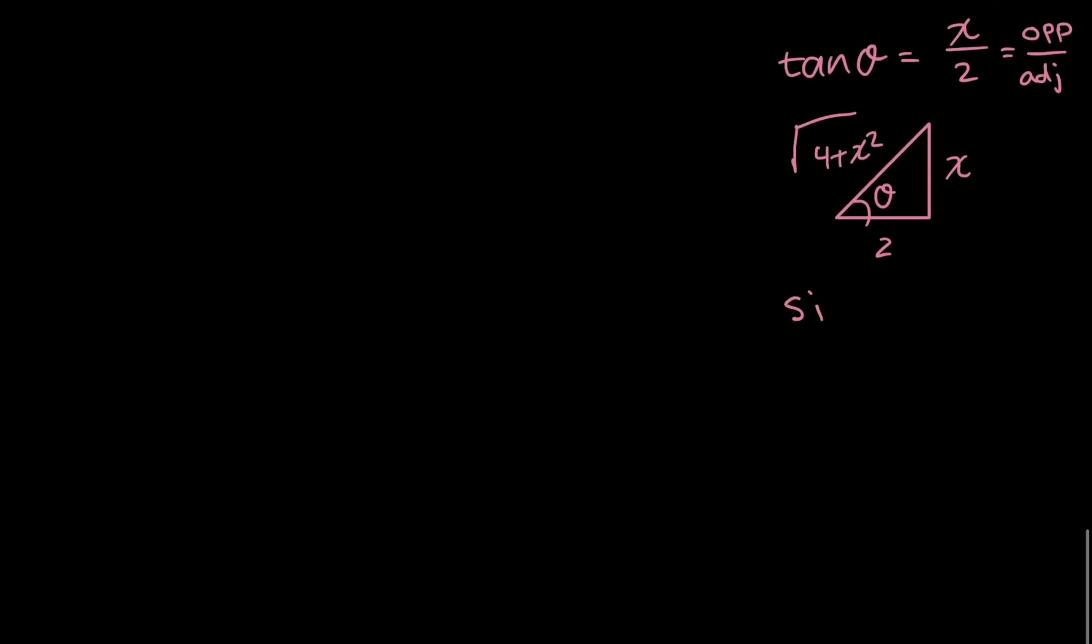So what is sine? Sine theta is equal to the opposite over the hypotenuse of a triangle. Well, I have all the pieces, so I know that sine theta is going to be equal to x over the square root of 4 plus x squared.